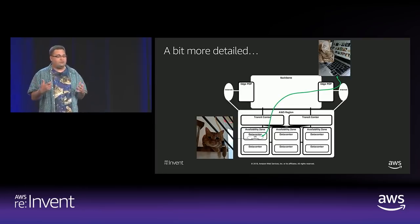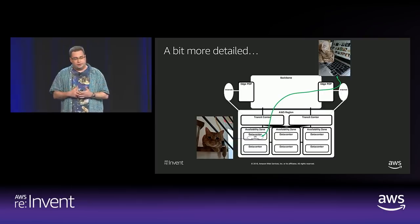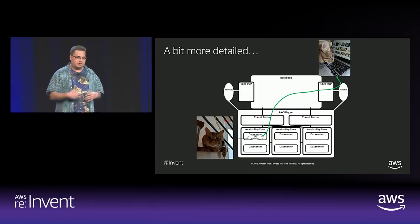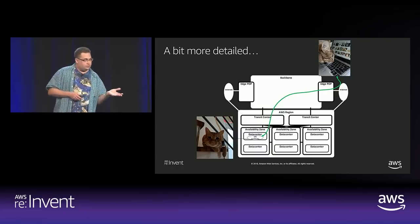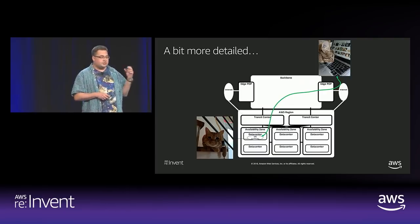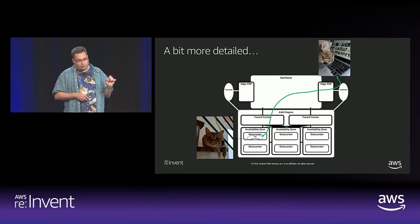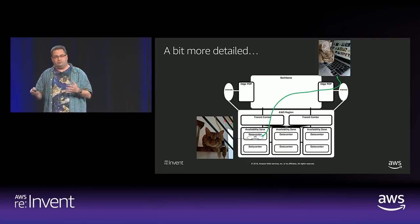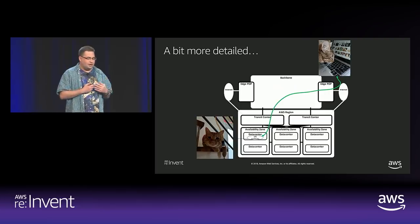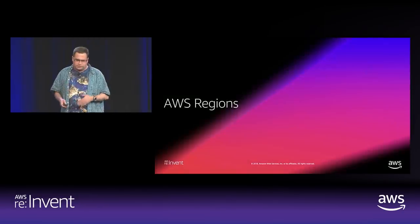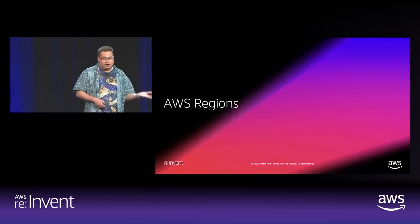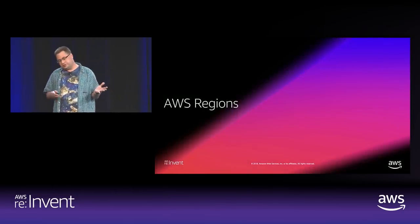Within the ADOS network, we have a lot of different things stitched together. We have data centers, which live inside of availability zones, which are part of regions. They have transit centers that serve as our on-ramp and off-ramp onto our global backbone. We have internet connectivity that goes into the transit centers within a region, as well as to edge pops at the perimeter of the network. From our perspective, you don't have to know all these different things in order to build on top of ADOS.